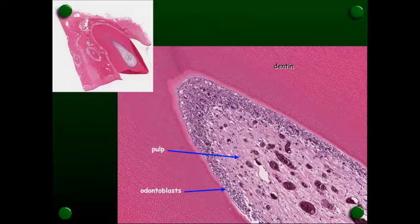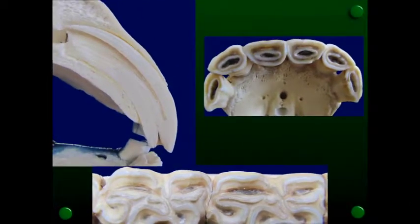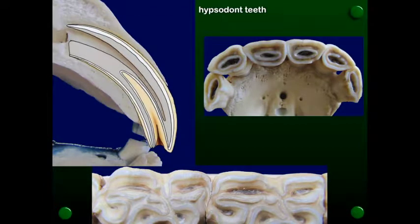So what we've looked at here are the brachiodont teeth. Let's have a quick look at the hypsodont tooth. So with the hypsodont tooth, with eruption, that dental sac doesn't collapse down towards the root, but covers the whole of the erupting tooth, so that we see, after the tooth has erupted, we're going to see cementum on that outer surface.